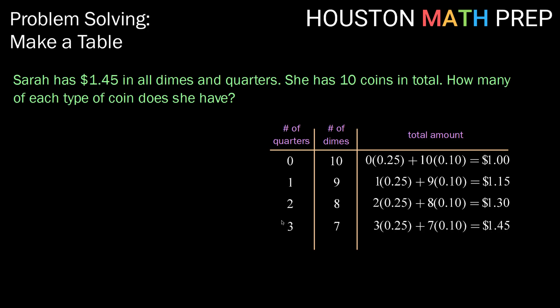If so, we should have that 3 quarters and 7 dimes gives us, there it is, our total of $1.45. So, Sarah has 3 quarters and 7 dimes.